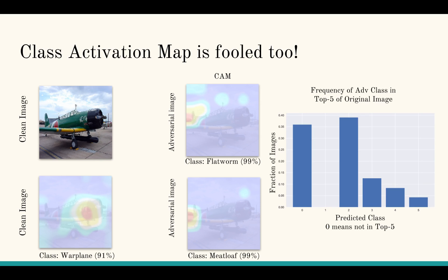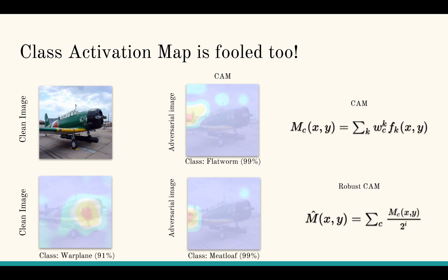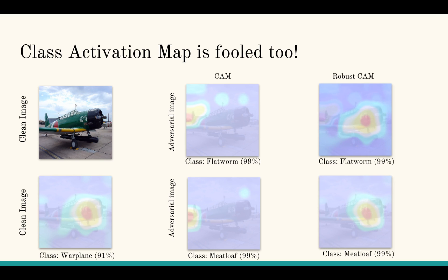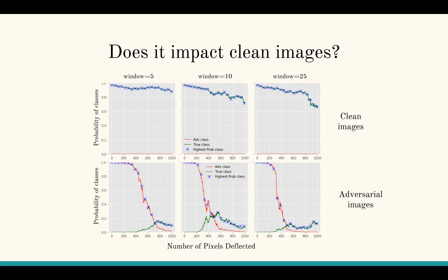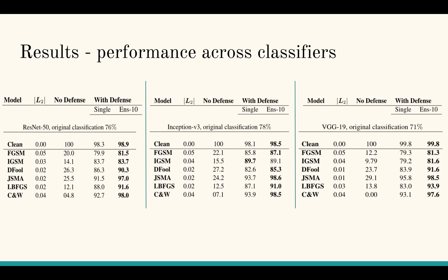We use the class activation map to obtain the probability of a given pixel's likelihood of being in the foreground. There is an issue with the standard class activation map computation — we encourage you to read our paper for details — and we fix that problem by changing the way class activation maps are computed. Our technique does not alter clean images significantly and preserves the original class.